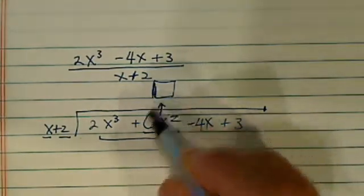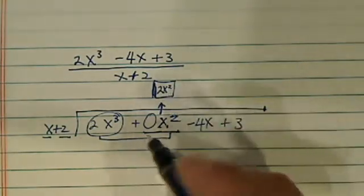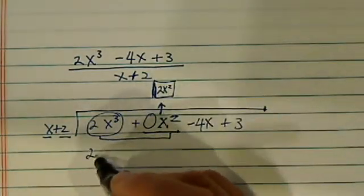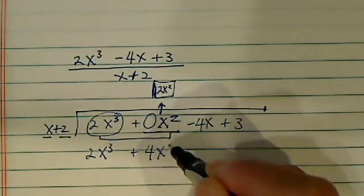The term I'm going to put in here is going to match this term identically because I'm going to have 2x squared over there. 2x squared times this one. I have 2x cubed plus 4x squared.